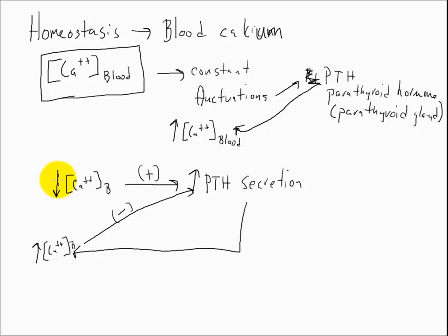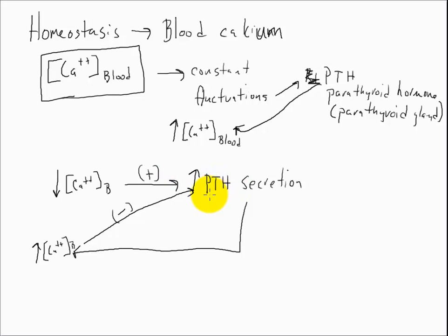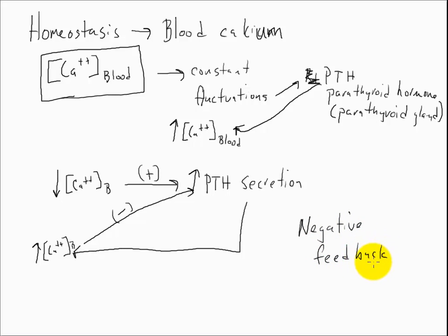The body detects a decrease in blood calcium and responds by increasing the secretion of parathyroid hormone from the parathyroid gland. This in turn, over time, increases the concentration of calcium in the blood, hopefully to a normal level, at which point it feeds back and turns off the release of parathyroid hormone. This is what we call a negative feedback loop.